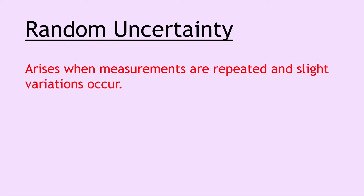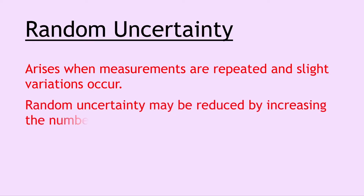Next we have random uncertainty, and this arises when measurements are repeated and slight variations occur — you can also call these fluctuations in the readings. Random uncertainty may be reduced by increasing the number of repeated measurements. Remember, on the relationship sheet in the exam there is an expression for random uncertainty, which says that you take the maximum value from a set of readings, subtract the minimum value, and divide by the total number of readings.